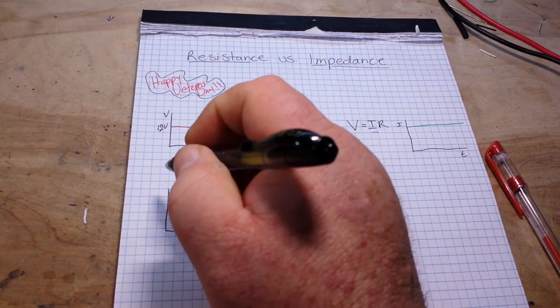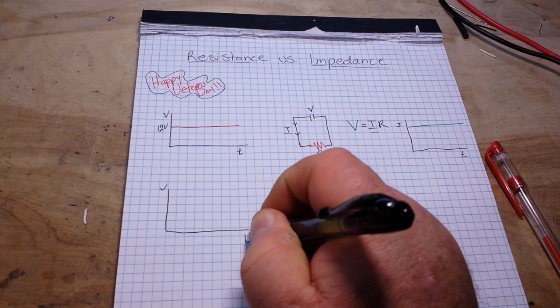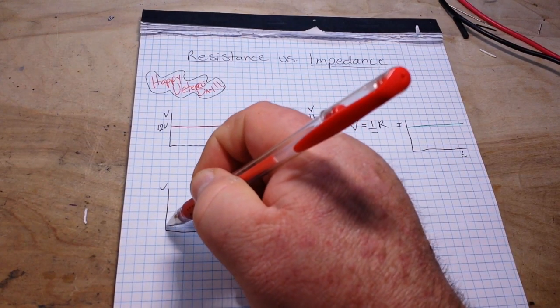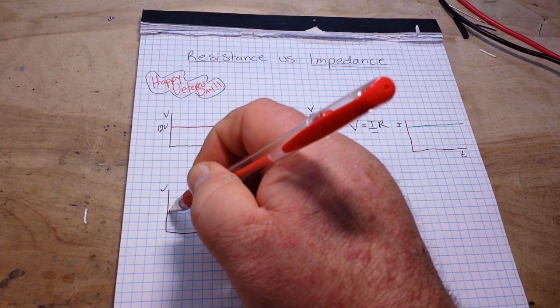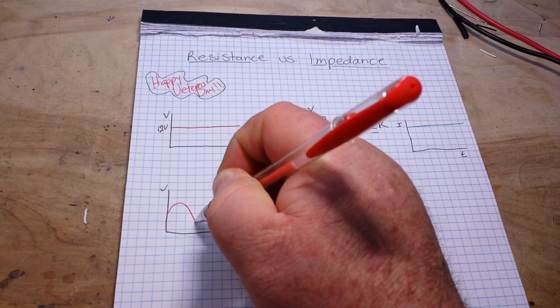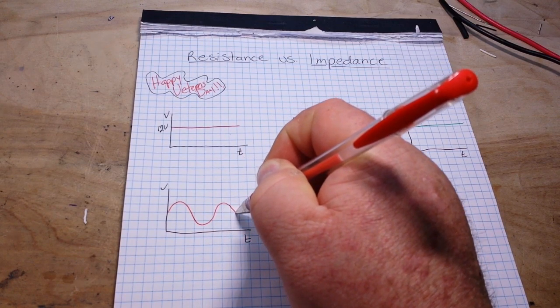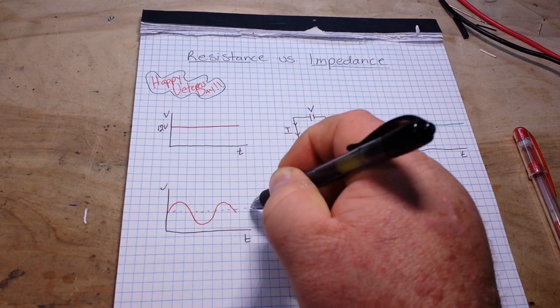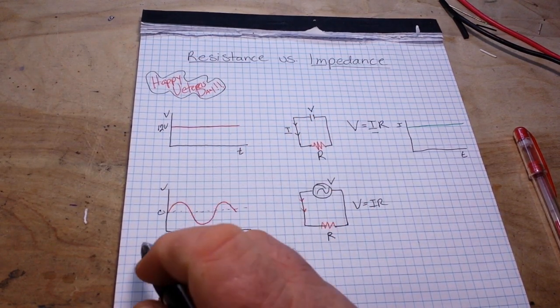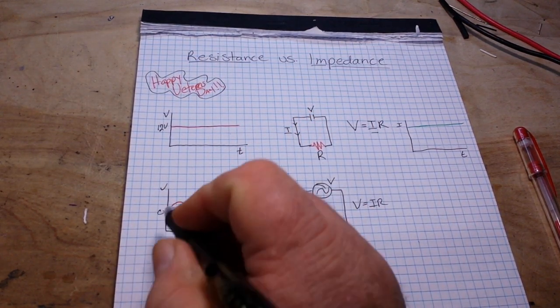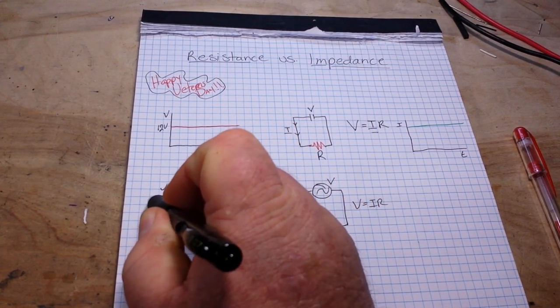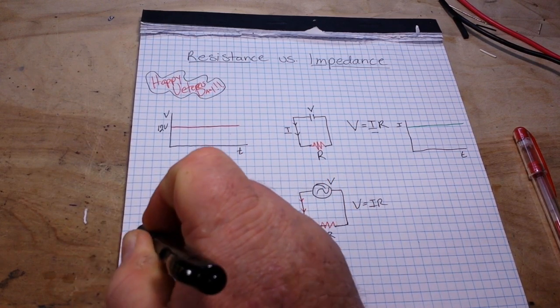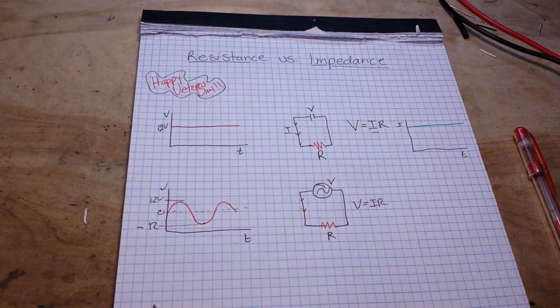So now we have our voltage and we have our time, but now our voltage is a sine wave. And so we'll say that's 0 volts and then that's 12 volts. This is now minus 12 volts.